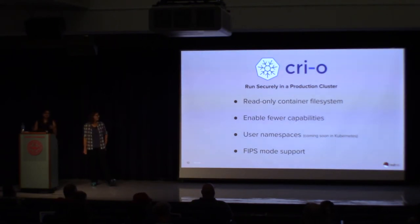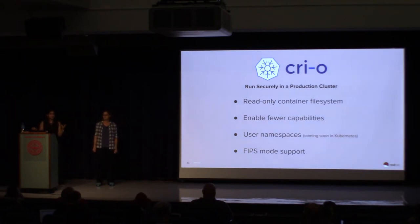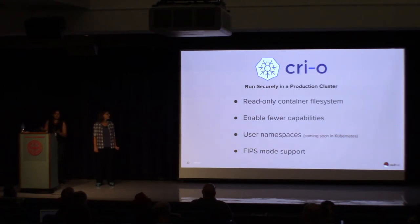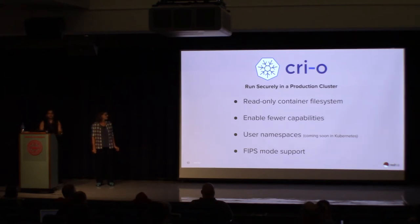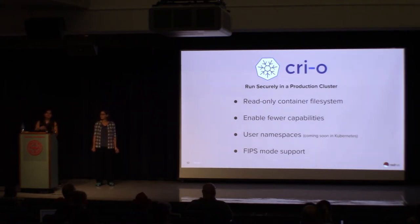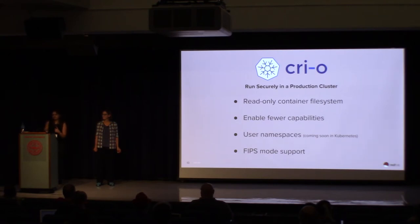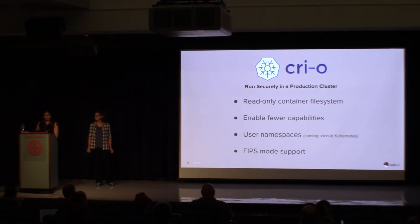Now that we have a tool to build our container images, we've tested and ran them locally using Podman, and put them on registries using Skopeo, the final thing we want to do is to run these containers in production — in Kubernetes, for example. That's what CRI-O does. CRI-O is a container runtime interface that you can use to interact with the Kubernetes API to launch containers in production. We firmly believe that when you're running containers in production, you should run them in read-only mode.